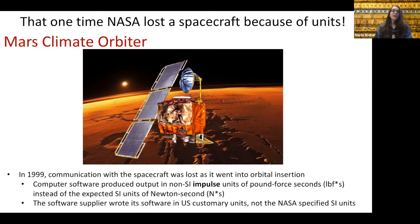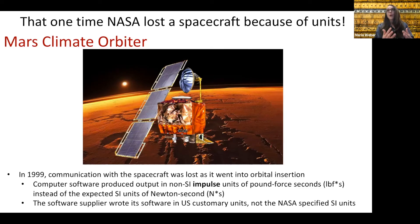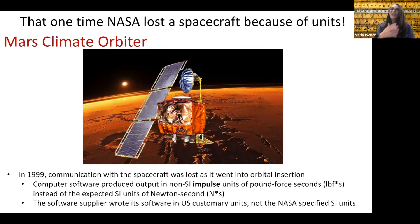The software supplier wrote its software in US customary units — our imperial-based system — not the NASA-specified SI units. The difference between what the spacecraft was expecting and what it got from the software caused it to eventually crash into the surface of Mars. That's why it's important to have a standardized system of units. When talking to scientists all over the world, or to classmates about measurements we took, they need to know that their centimeter measurement is going to be the same as your centimeter measurement.